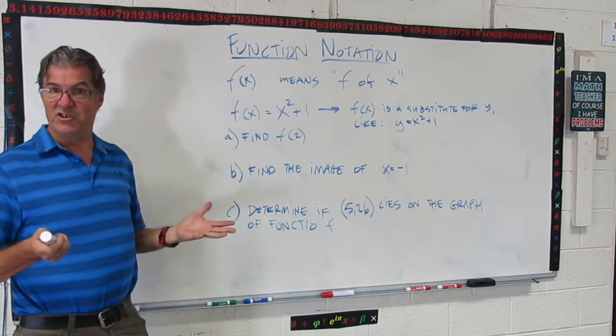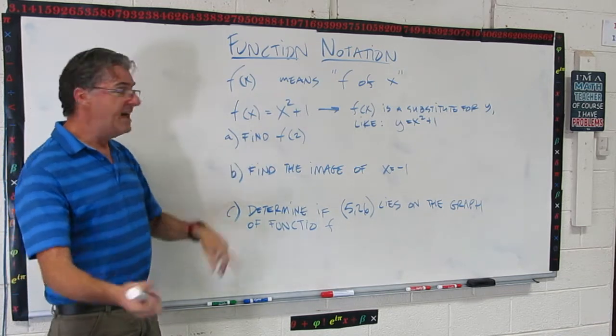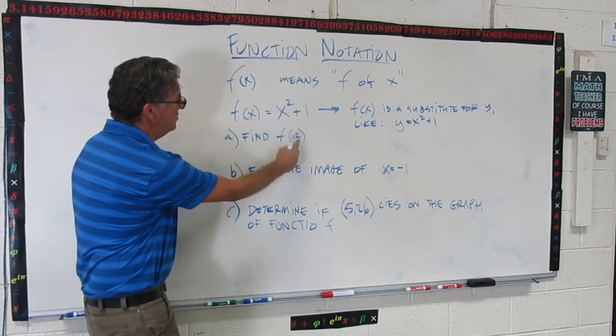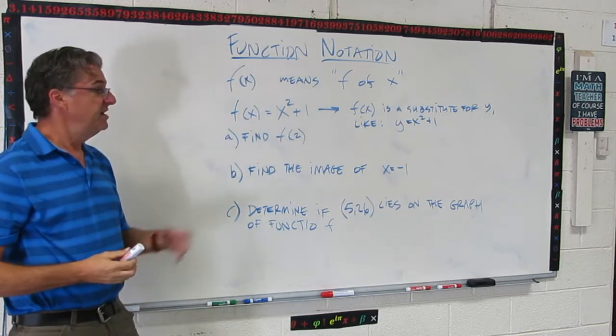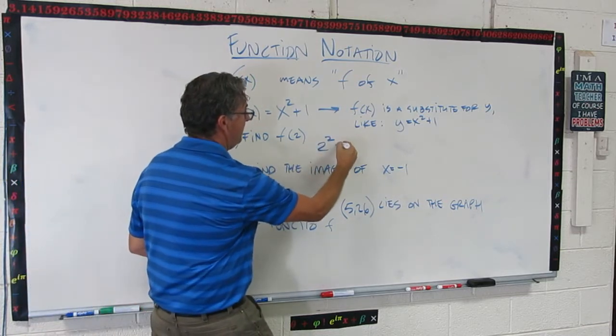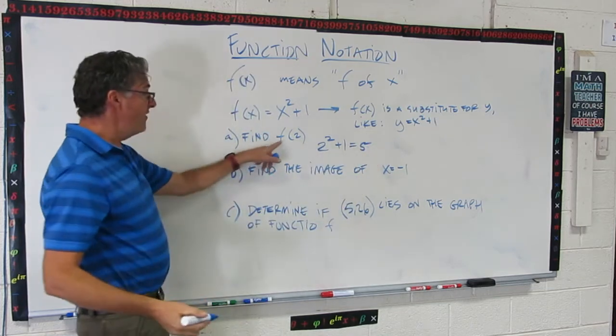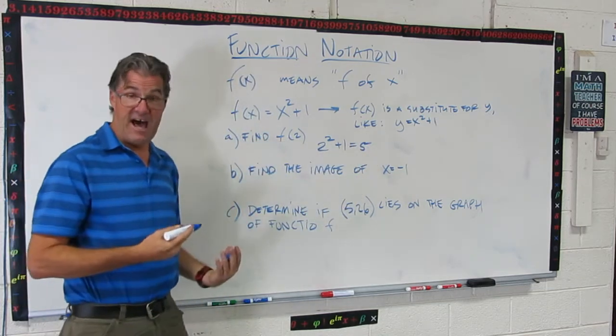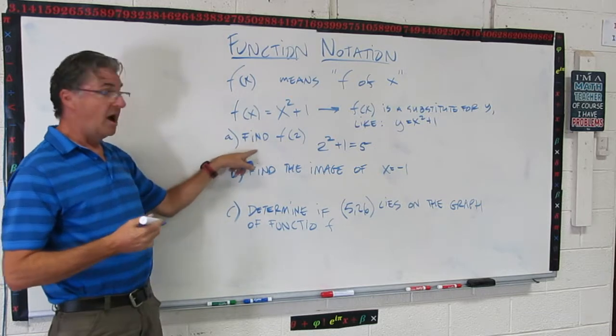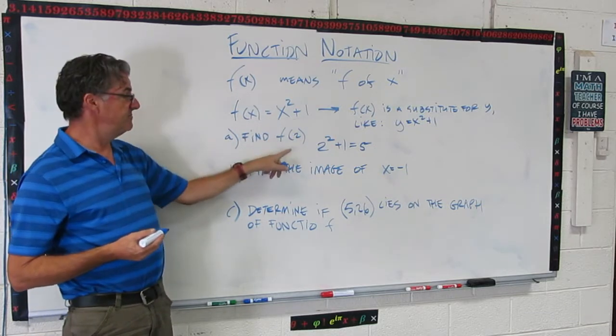So here's the kind of questions you might get. Find f(2). And so what that means is put in the 2 wherever the x is in f(x). So f(2) is going to be 2² + 1, which is 5. So f(2) = 5. So you're going to see some instructions that write it like this. Of course you have to have the function to be able to do that.